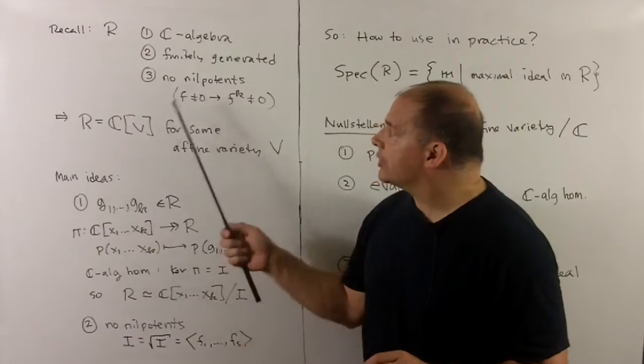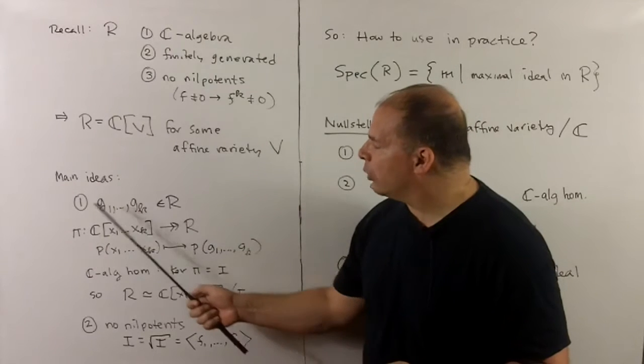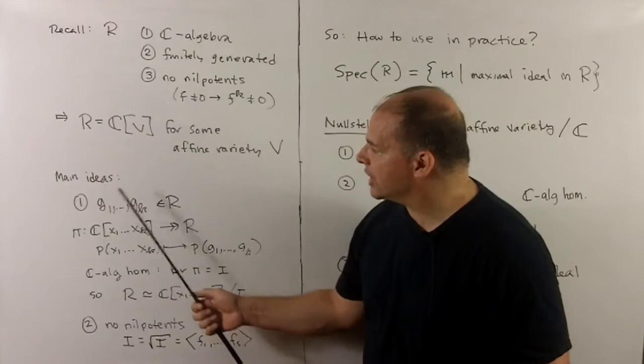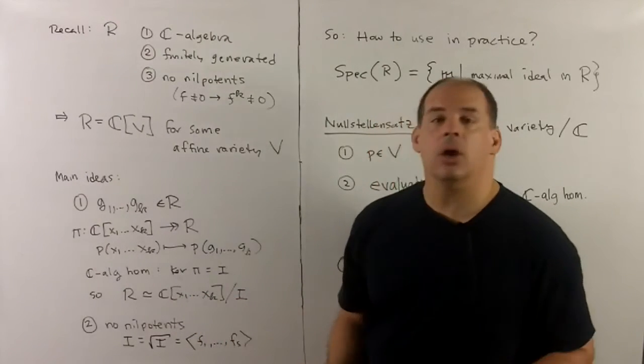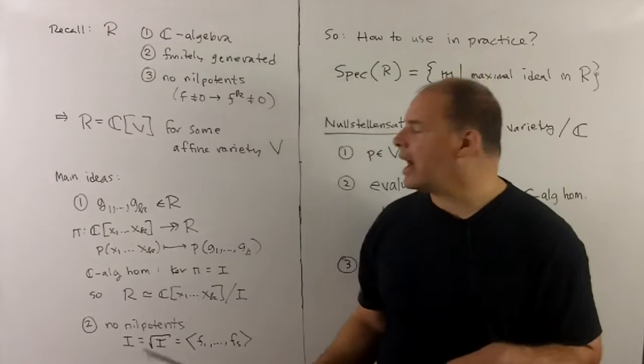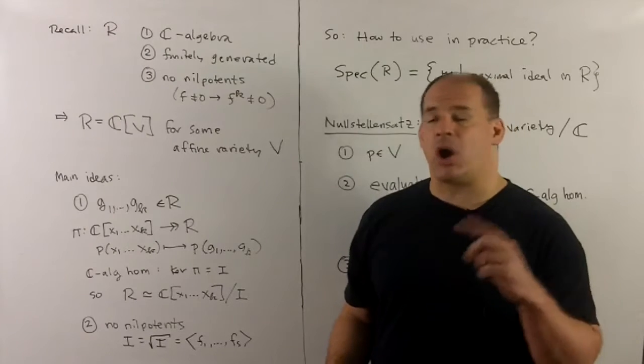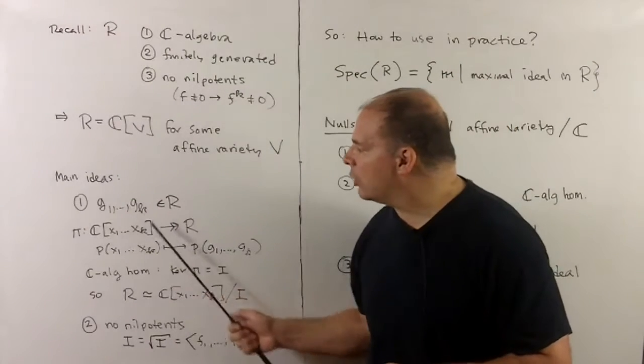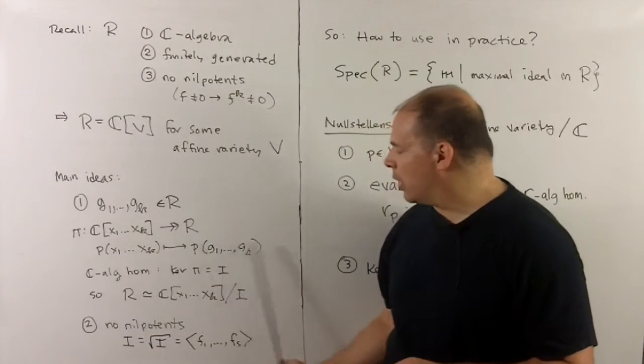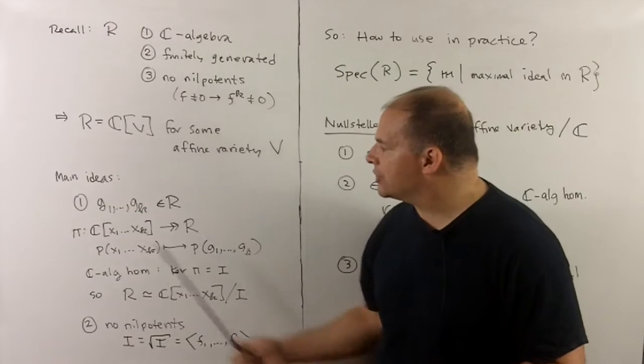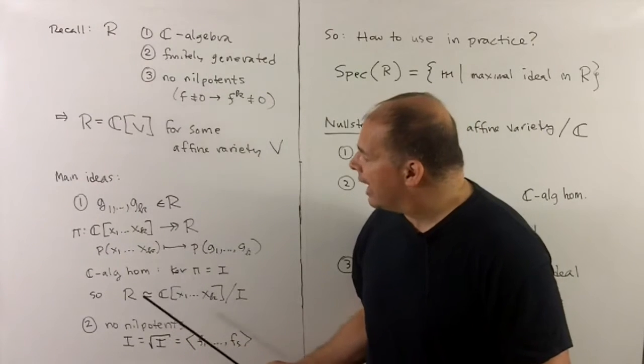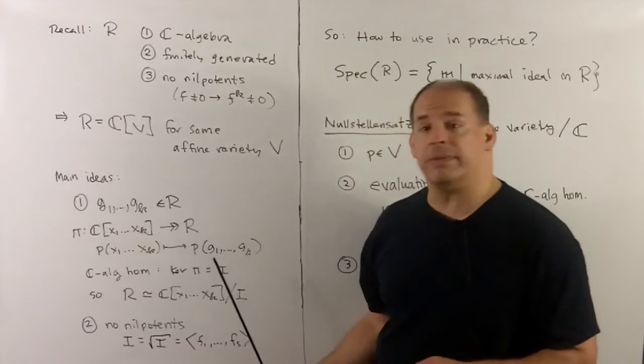Well, the main idea is since this is finitely generated, we'll pick a small set of generators, say G1 through GK. I'll consider polynomials over the complex numbers in K variables, and I'll have a map into R, just given by taking these polynomials and evaluating at G1 through GK.